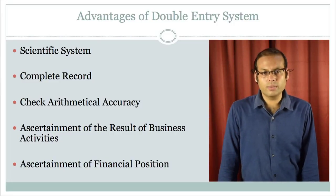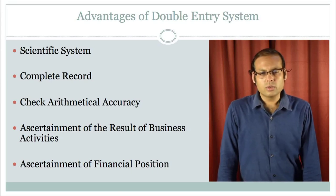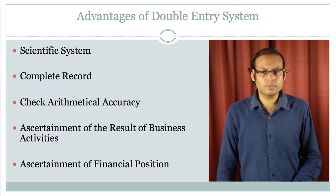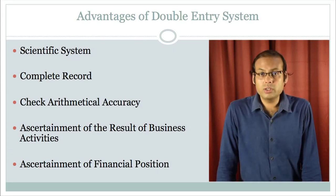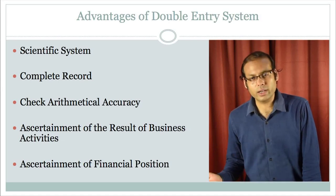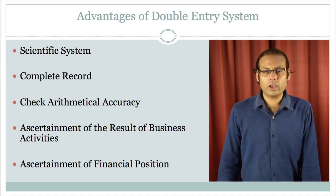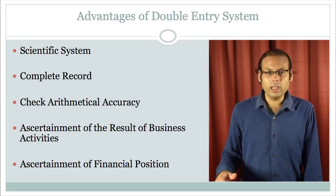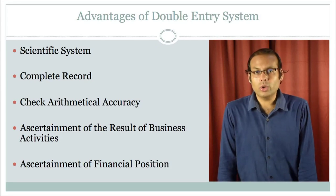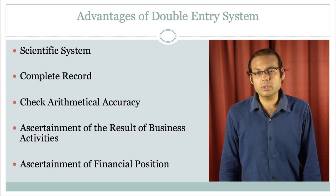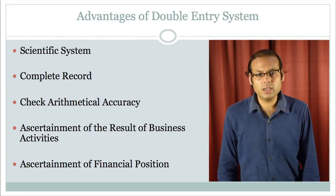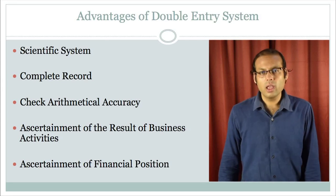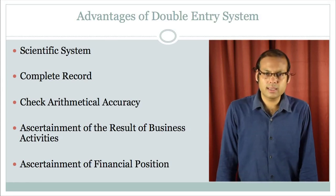These are the features and the process of the double entry system. Now let us see the advantages of this system. This is a scientific system. If I wrongly recorded a particular aspect — suppose in my books of accounts I recorded purchase for Rs. 3000 instead of Rs. 2000, but recorded the cash aspect rightly as 2000 — these two amounts will vary and it will show that there are some mistakes. So this system is very scientific and serves the purpose of correcting all the entries automatically. It records the whole transaction — it is a complete record, recording both aspects: purchase and cash; or sale and cash under the double entry system.